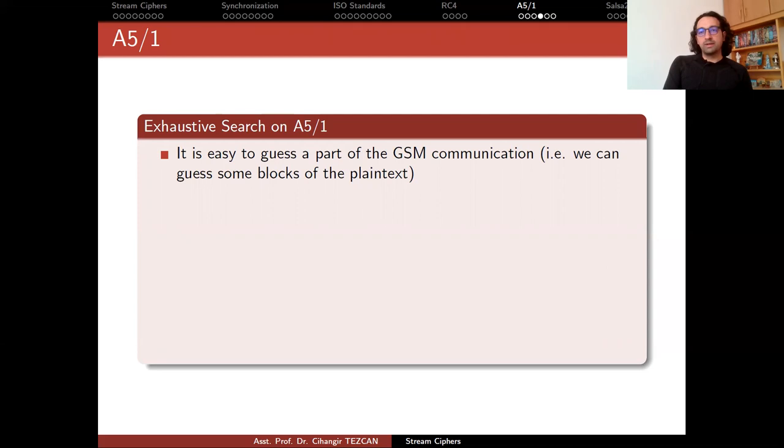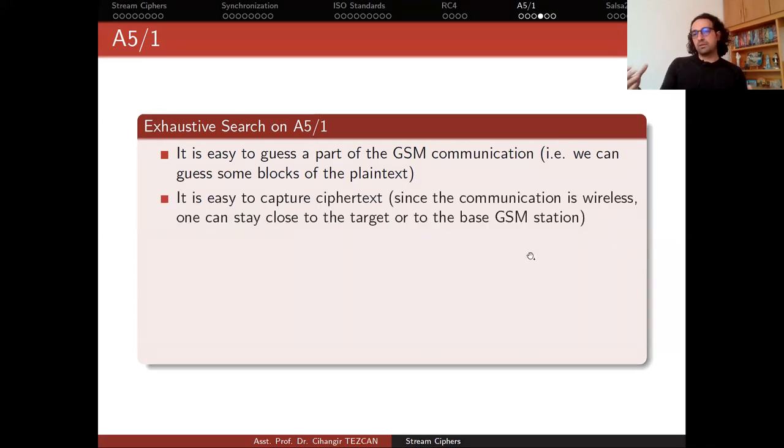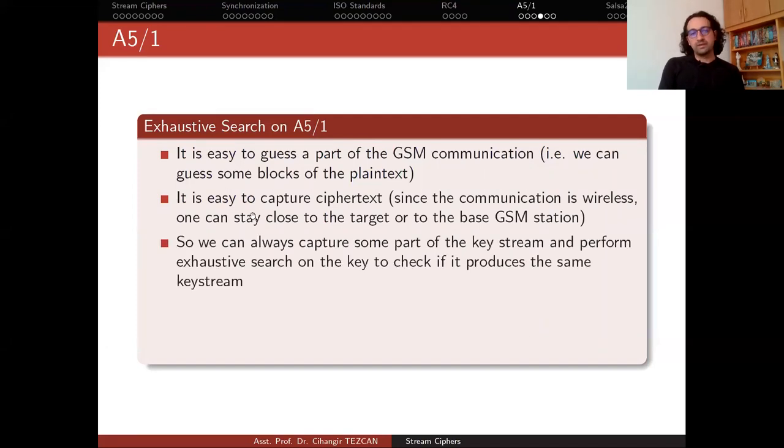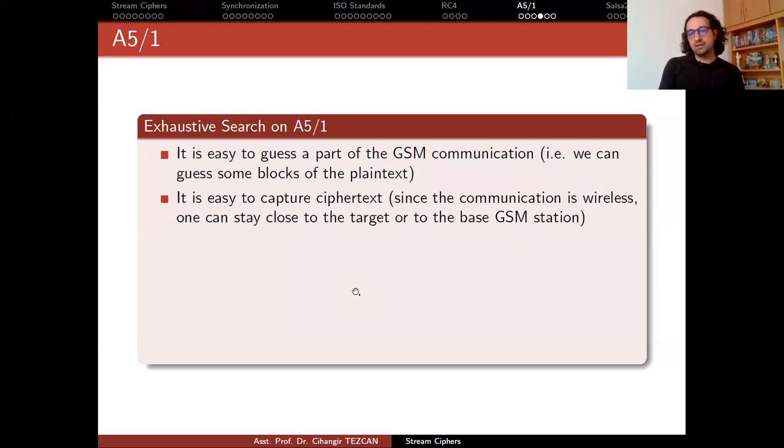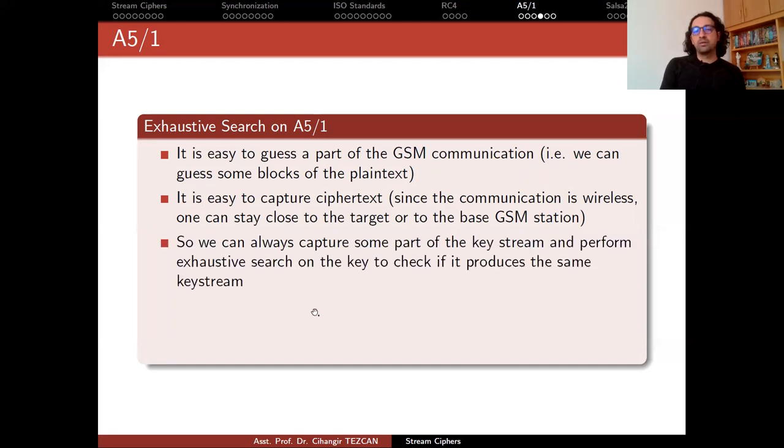So why is it broken? Let's talk about it. We can perform an exhaustive search attack on A5/1. It is easy to guess a part of the GSM communication. In other words, we can guess some blocks of the plain text. So if you know the plain text, since you captured the ciphertext, you XOR them and you obtain the key stream. Now you have to perform an exhaustive search attack so that you try every key and see which one produces this key stream, since you already captured the key stream. It is easy to capture ciphertext since the communication is wireless. One can stay close to the target or to the base GSM station to obtain ciphertext. So we can always capture some part of the key stream and perform exhaustive search on the key to check if it produces the same key stream.